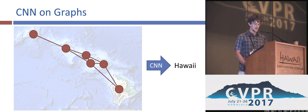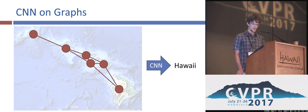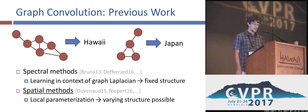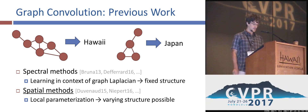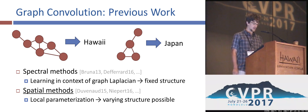Fortunately, many concepts can be adapted from the regular domain, including convolution. Past work has developed two kinds of approaches to graph convolution. Spectrum methods learn filtering weights in the context of a particular graph Laplacian, and results have been demonstrated with fixed graph structure only. As we want to be able to process graphs with varying size and connectivity, we base our method on spatial formulations, where the filtering is performed locally.